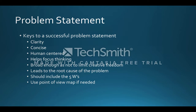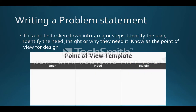You should also use a point of view map, which is going to help you design and write your problem statement. Here is an example of a point of view map template. When writing your problem statement, it is important that you break it down into three major parts: identify the user, identify the need, and have some insight as to why they might need that design.